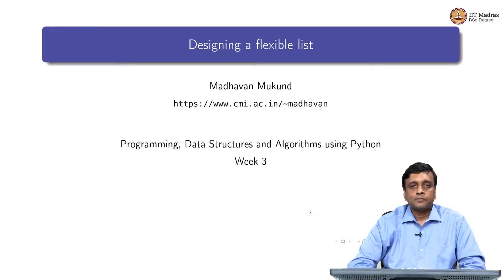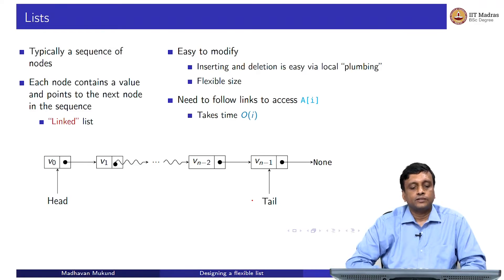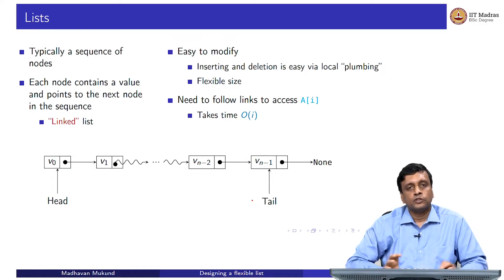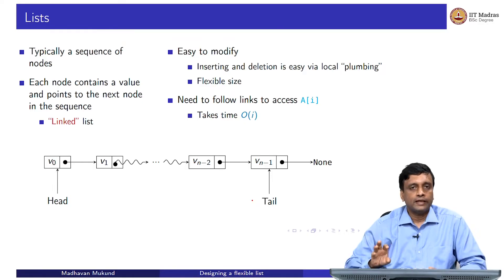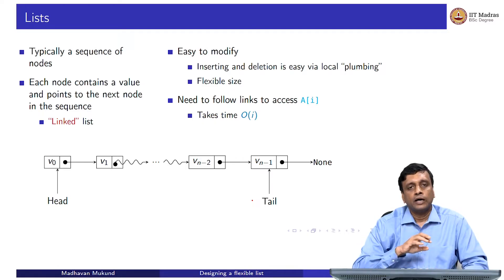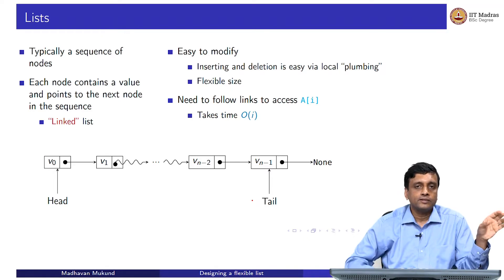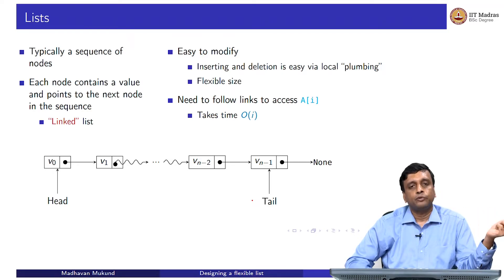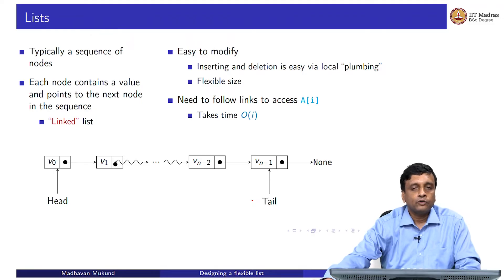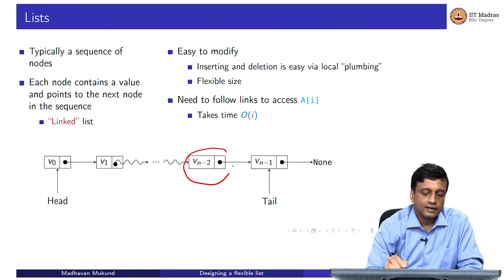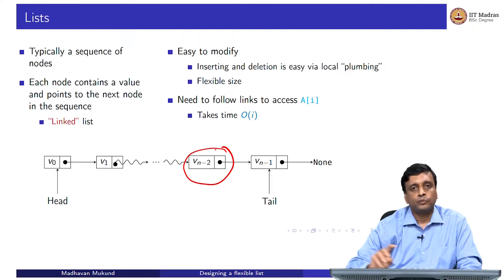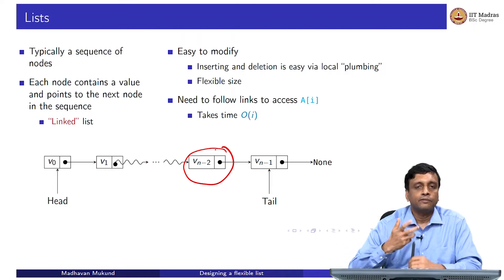We talked about flexible lists which can expand and contract and which are like a train, so they have this linked structure. Let us try to understand how we might actually program such a list. A list is a sequence of nodes; each node consists of a value and something that points to the next node. Using this plumbing operation, it is easy to insert and delete locally, but to navigate to a particular point in the list, you have to start from the head each time. The typical way to represent these is as collections of nodes, so we need something which represents one node in a list and then we will string them together.